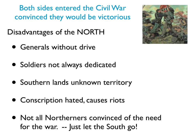Southern lands were unknown territory, and in certain places were mountainous, making it very hard for northern troops to know where they were and what they were doing. Conscription was used in the North but was hated — in New York it caused a riot, and in some other places as well. People could weasel their way out of conscription. And not all Northerners were convinced there was a need for the war. There was a group of Northerners, which grew over time, that basically said, 'forget it — just drop the war and let the southern states go their own way. We'd be glad to be rid of them anyway.'